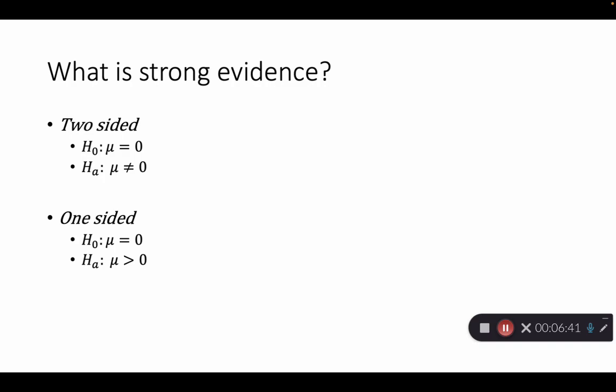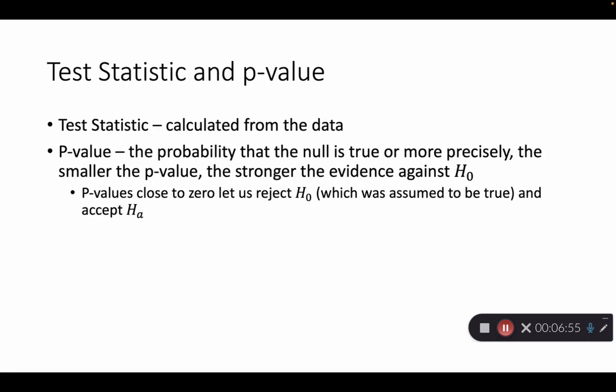And then we can also look at a one-sided, which simply means is it less than. Now notice we don't have less than or equal to. This is strictly less than because we're saying mu is greater than 0 or mu is less than 0 would be the way we'd write that. And mu being equal to 0. So those are the two ways that we can do that, one-sided and a two-sided.